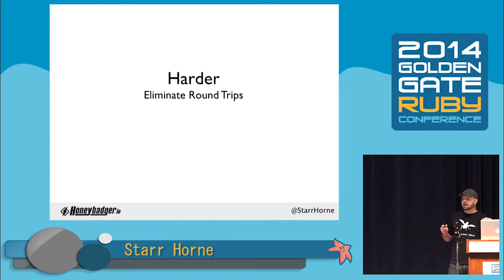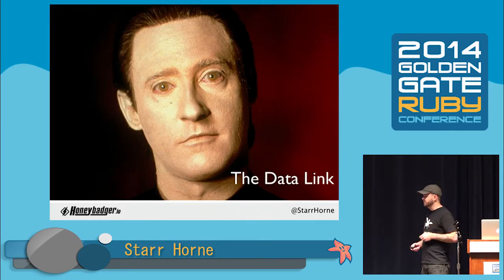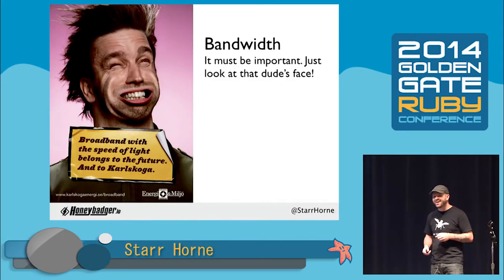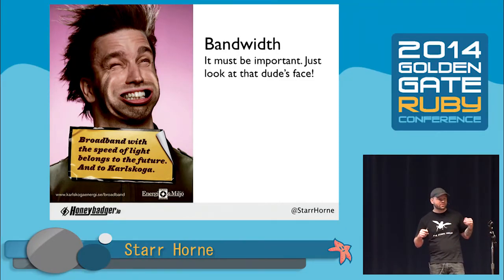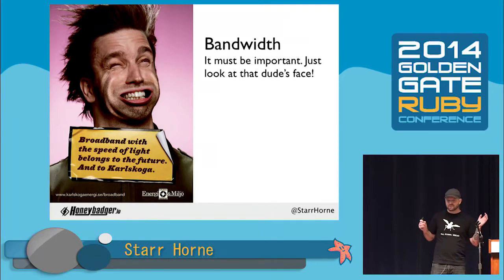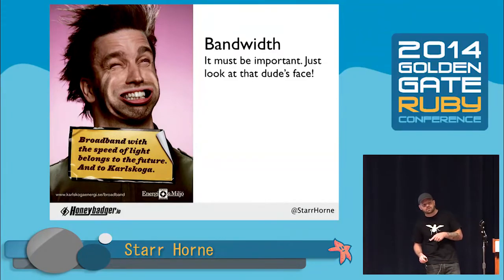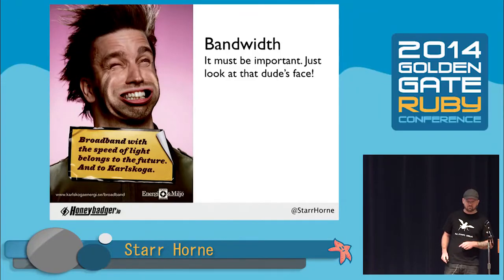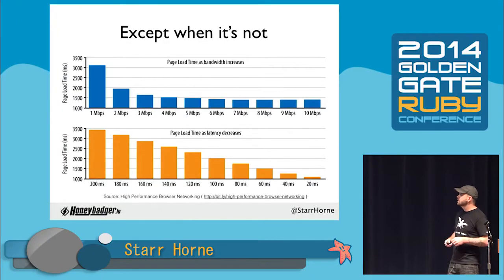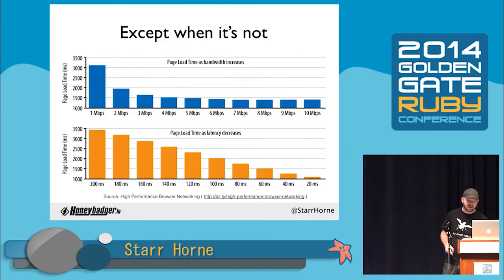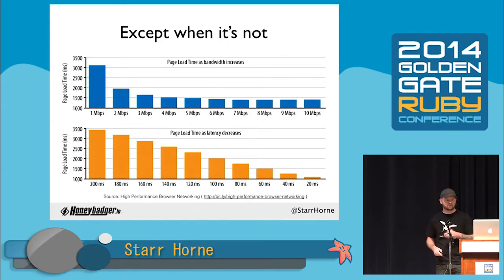Before we do this, I want to talk about bandwidth for a second. The data link is your Ethernet card — your cable connection — and it determines your bandwidth. Cable companies spend millions convincing us that life at 10 megabits per second is at least 10 times better than at 1 megabit per second. Only it turns out that's a lie. Smart people at Google found that after about 3 or 4 megabits per second, you get diminishing returns — adding more bandwidth doesn't significantly decrease page load time. However, page load time decreases linearly as a function of latency.